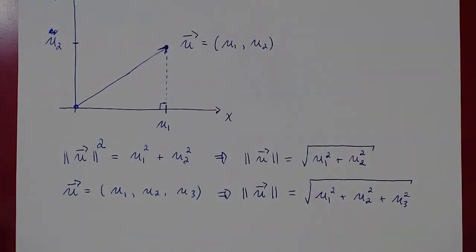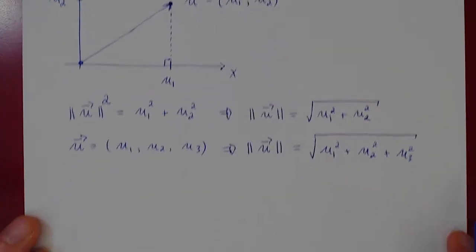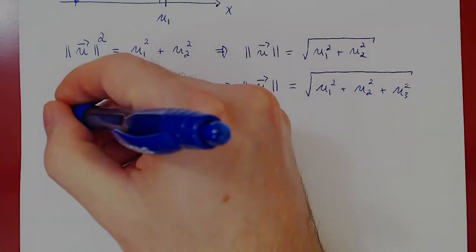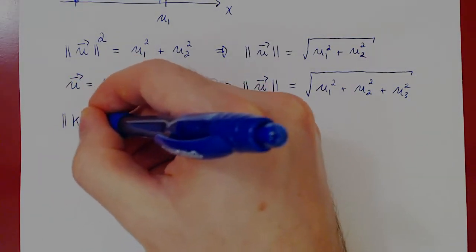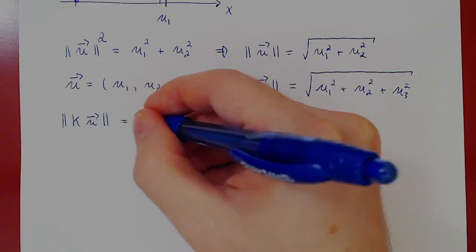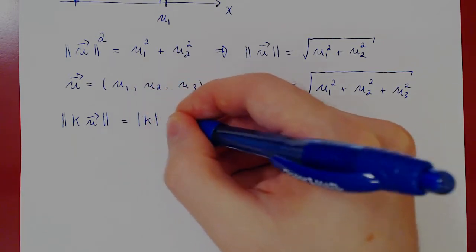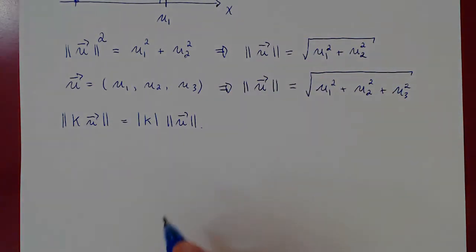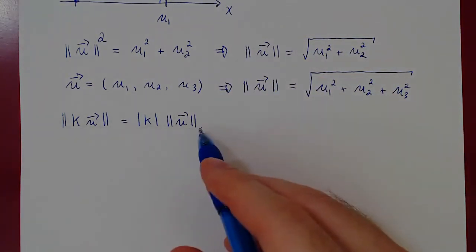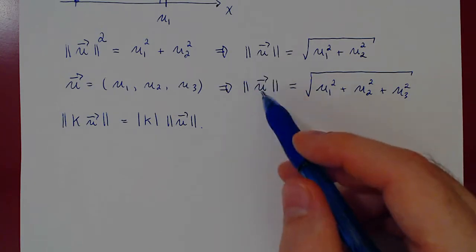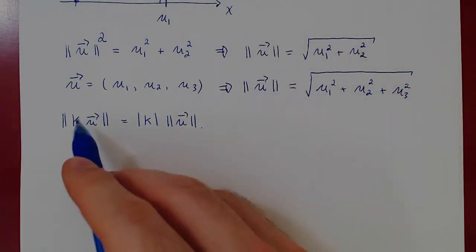So we have the norm of a vector. Recall that we have a basic property for the norm: the norm of a scalar multiple of u — we can move k outside, but of course in absolute values — times the norm of the initial vector. You can prove this property very easily with these formulas for the norm, and again this is left as an exercise.